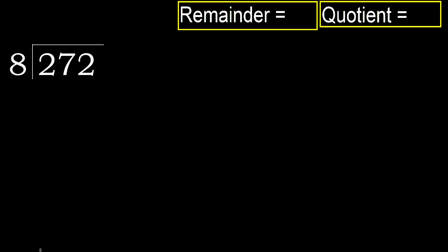272 divided by 8. 2 is less, therefore next. 27 is not less, therefore we work with 27 and 8 — multiply by which number is nearest to 27.